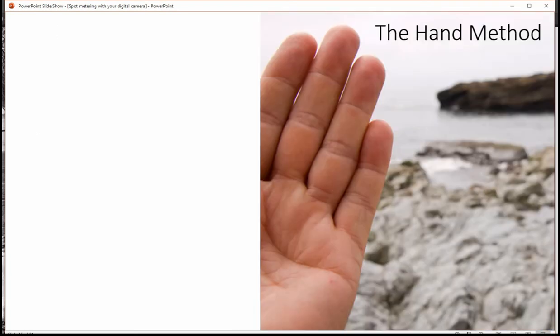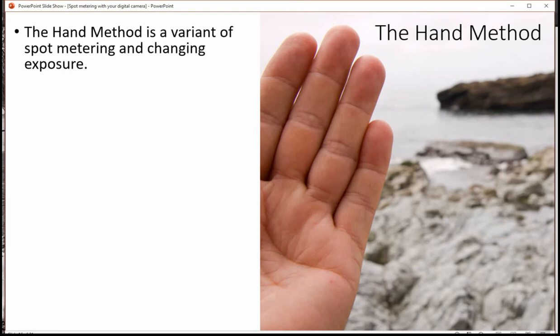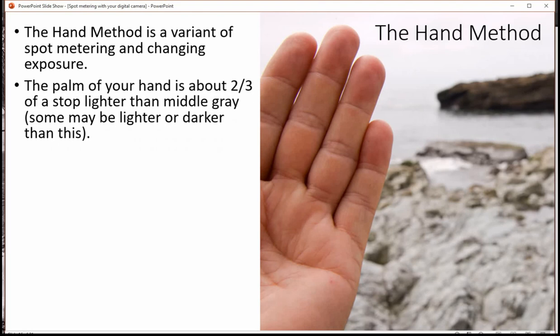Now a variation on this is something called the hand method and I used this for years when I was shooting film because it was a good way to estimate an exposure. The palm of your hand is about two-thirds of a stop lighter than middle gray. Your palm might be lighter or darker than this but mine's about two-thirds of a stop. It tends to be the standard.